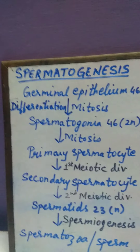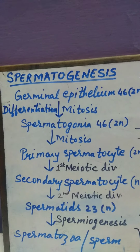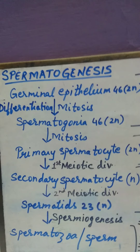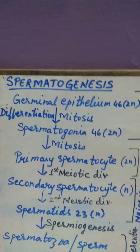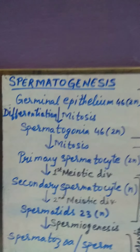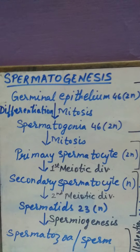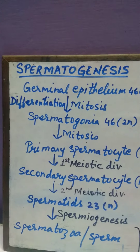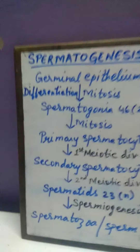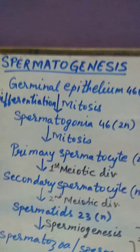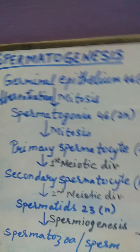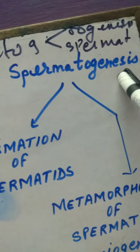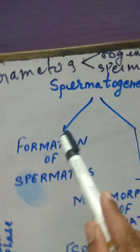Today we are only going to discuss spermatogenesis. Spermatogenesis means production of sperm. Spermatozoa are produced in the seminiferous tubule, and this process is completed in two stages.